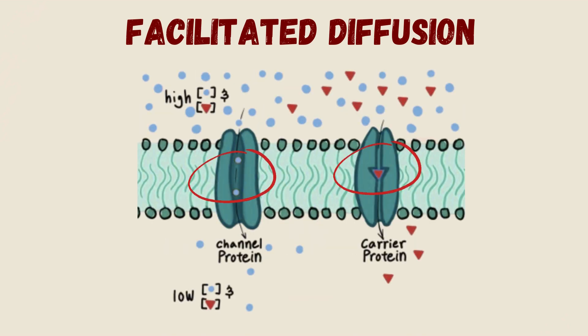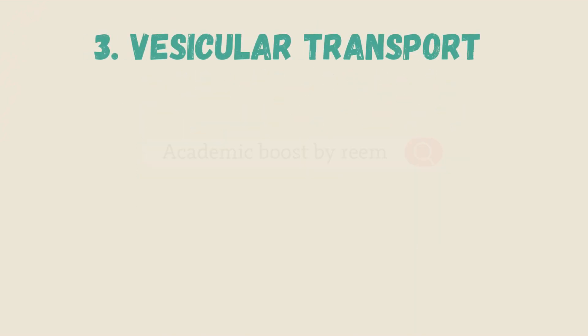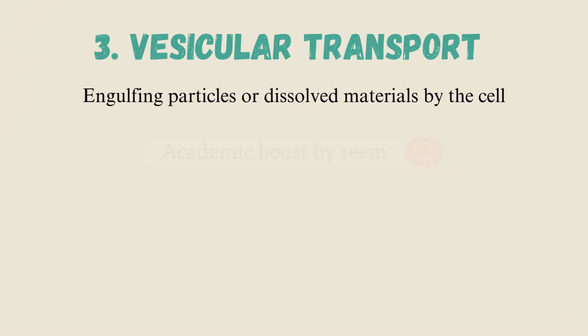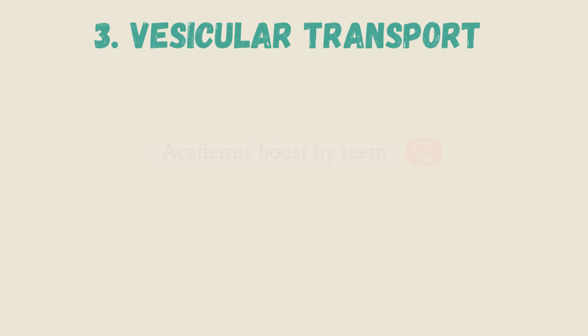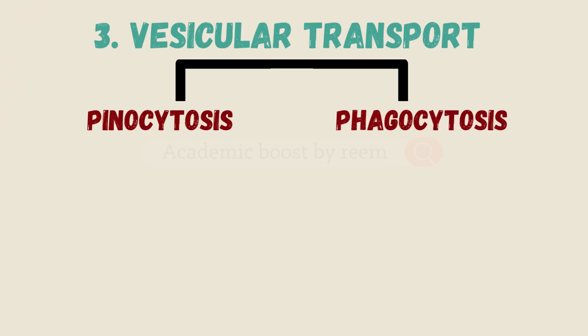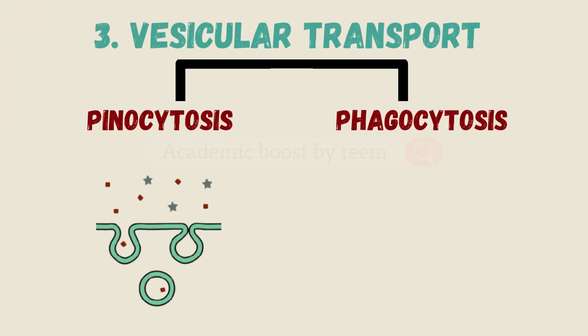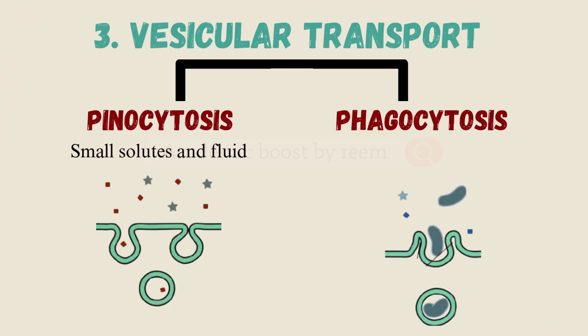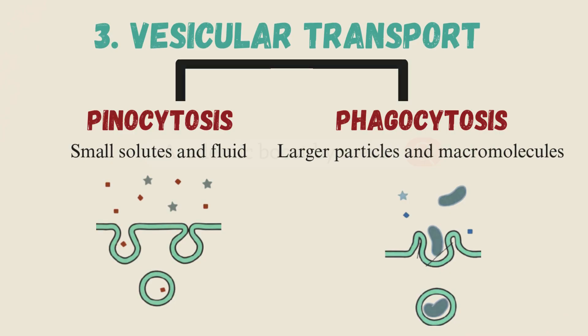Number three: vesicular transport, which is the engulfing of particles or dissolved material by the cell. It's an active process requiring energy. The two most common types are pinocytosis and phagocytosis. Pinocytosis engulfs small solutes and fluid, while phagocytosis engulfs larger particles and macromolecules.